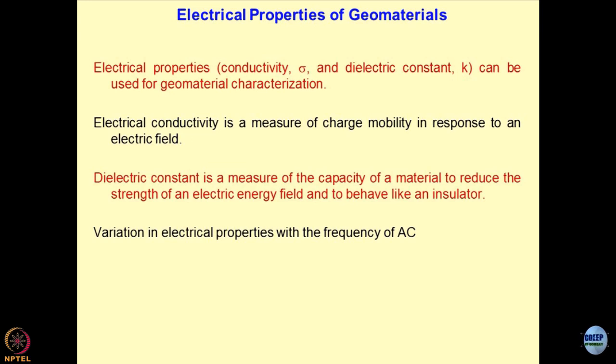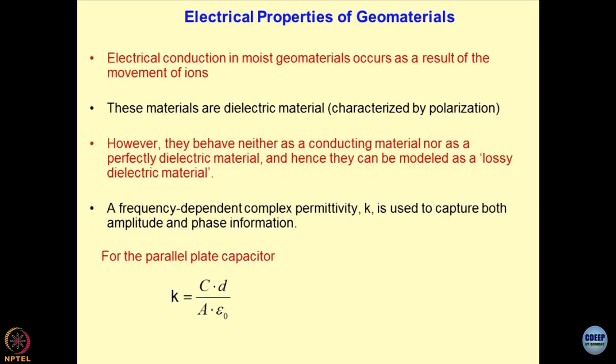This is known as dispersion of electrical properties or dielectric dispersion in the material. The electrical conduction in moist geomaterials is significant. We have talked about polarization — when you apply the voltage across the sample through electrodes, they get oppositely charged. We use here the concept of lossy dielectric material; we treat soil as a lossy dielectric material.